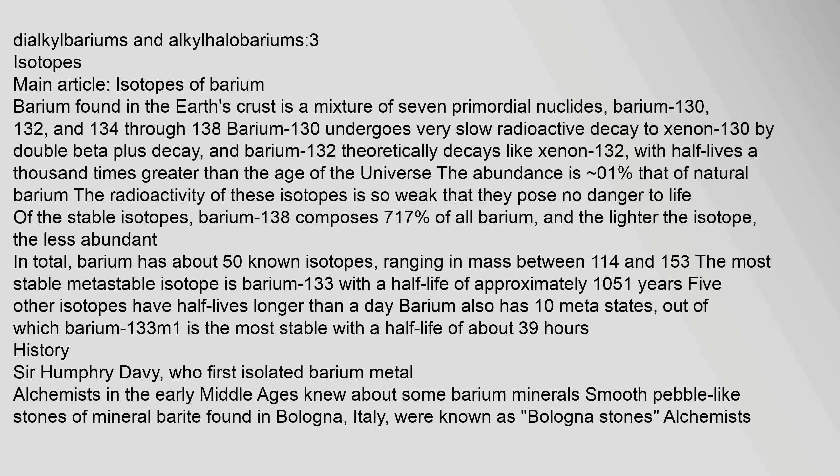Barium is found in the earth's crust as a mixture of seven primordial nuclides: barium-130, 132, and 134 through 138. Barium-130 undergoes very slow radioactive decay to xenon-130 by double beta-plus decay, and barium-132 theoretically decays to xenon-132 with half-lives a thousand times greater than the age of the universe, with an abundance of roughly 0.1 percent of natural barium. Of the stable isotopes, barium-138 composes 71.7 percent of all barium, and the lighter the isotope, the less abundant.